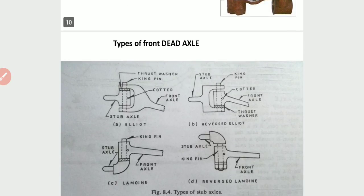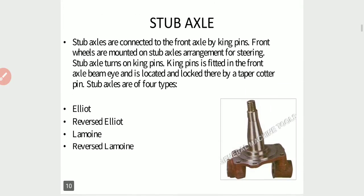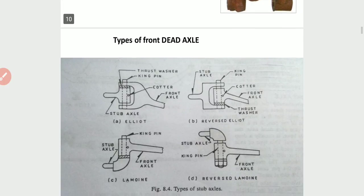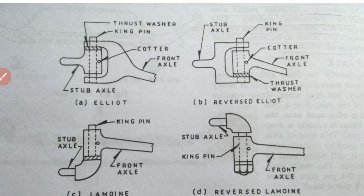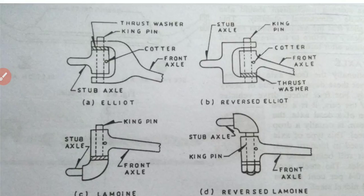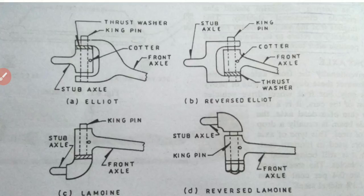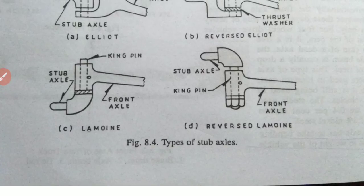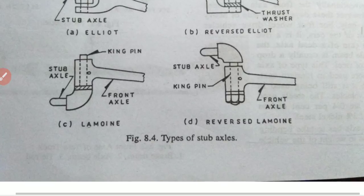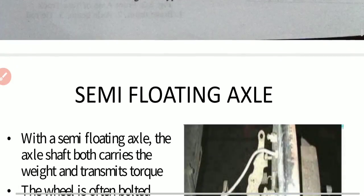Types of stub axle are shown in the diagram. Upper left is Elliot, upper right is reverse Elliot, lower left is LeMoyne, and lower right is reverse LeMoyne. These are the four types of stub axles.